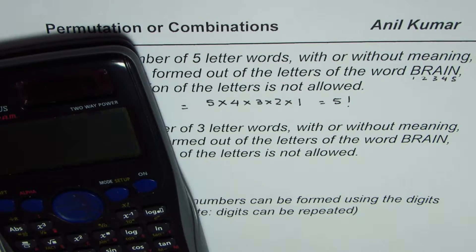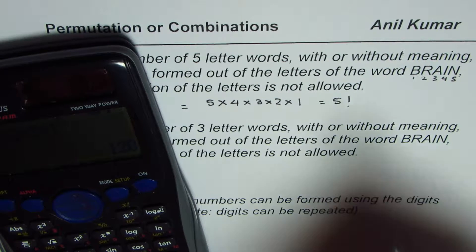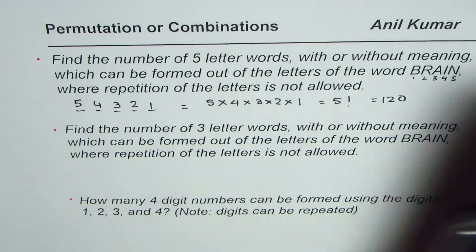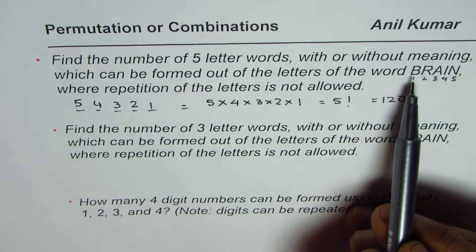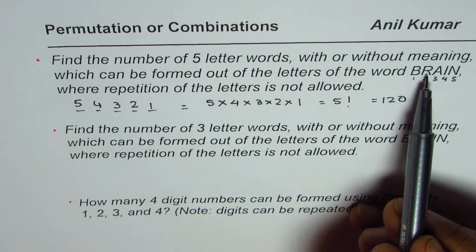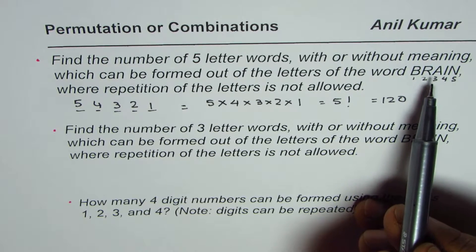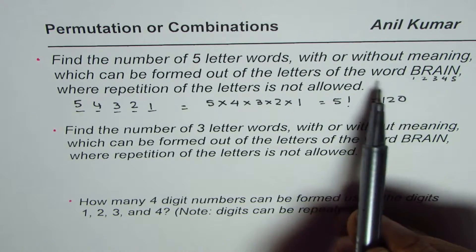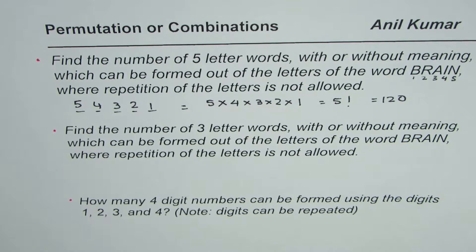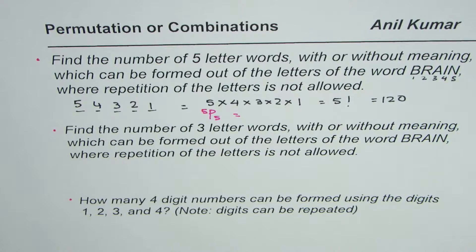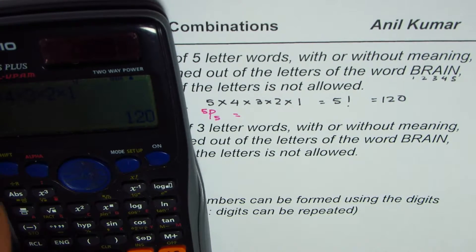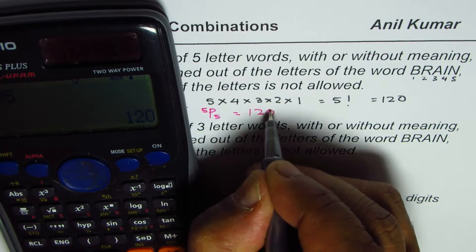So we multiply 5 × 4 × 3 × 2 × 1 and get 120. Now, the definition of permutation is an arrangement in a definite order. Here, order is important — if I write BRAIN and change it to RBAIN, it becomes a different word. So order matters, making this a case of permutation. Since we are taking all five letters, we can write the answer as 5P5. Using a calculator, 5P5 equals 120 — the same answer.